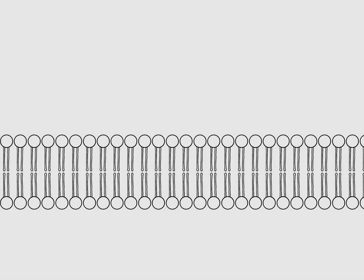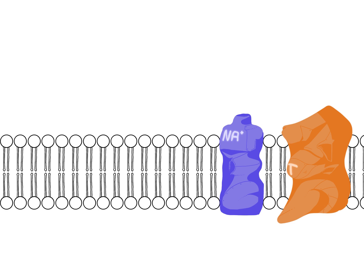The digestion of amino acids requires two proteins, a transport protein and an ion pump. Since the transport protein does not work without a sodium ion, an ion pump is required to perform this transport.